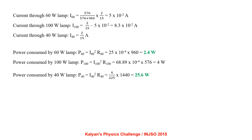Current through the 60 W lamp I60 equals (576 divided by 576 plus 960) times 2 by 15, using the inverse ratio rule for parallel resistances, which comes out to be 5 times 10 to the minus 2 ampere. Current through the 100 W lamp is 8.3 times 10 to the minus 2 ampere, and current through the 40 W lamp is 2 by 15 ampere. Power consumed by the 60 W lamp is 2.4 W, by the 100 W lamp is 4 W, and by the 40 W lamp is 25.6 W, so the correct option is D.